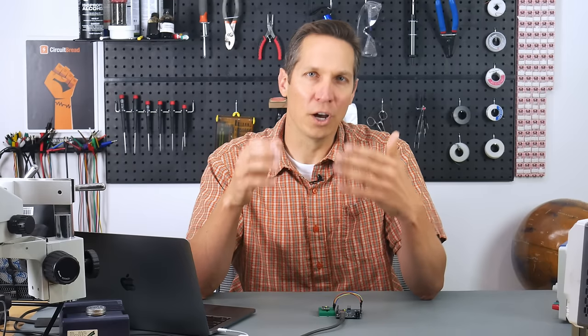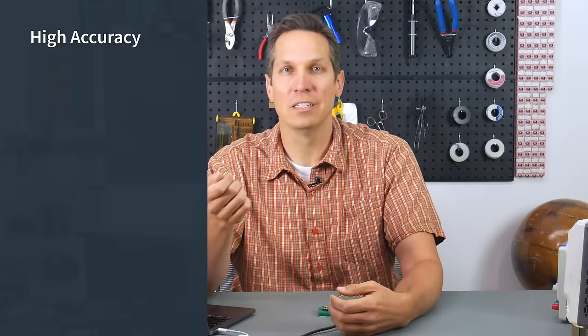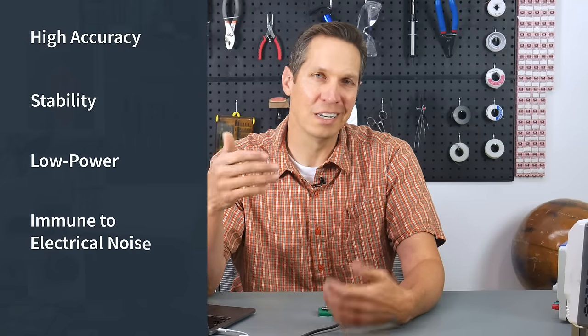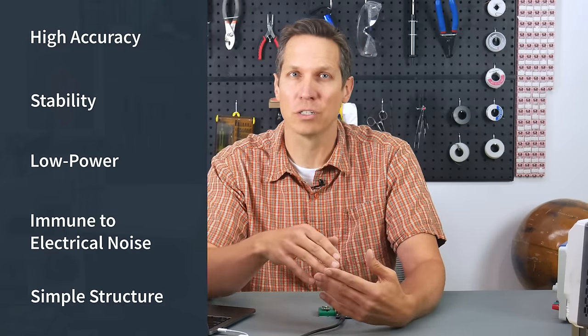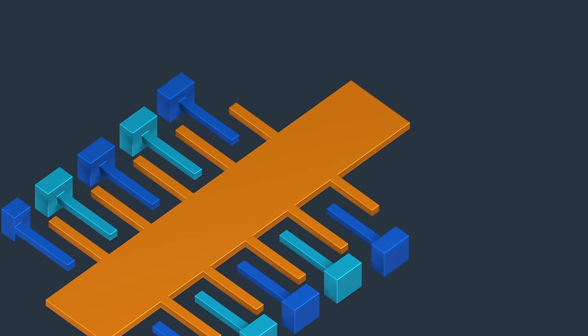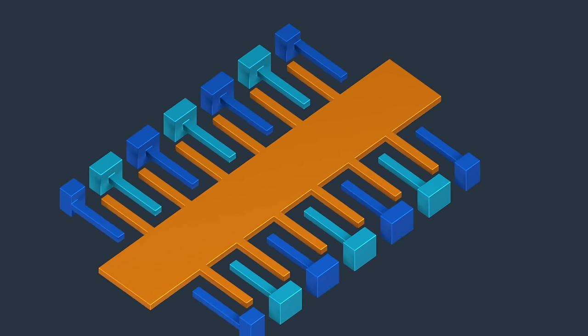While there are other technologies, capacitive sensing is widely used due to its high accuracy, stability, low power dissipation, noise immunity, and generally simple physical structure. But even with their benefits, sometimes the motion can be very hard to detect using a single differential capacitor. This makes it necessary to use multiple movable and fixed electrodes, all connected in a parallel configuration.